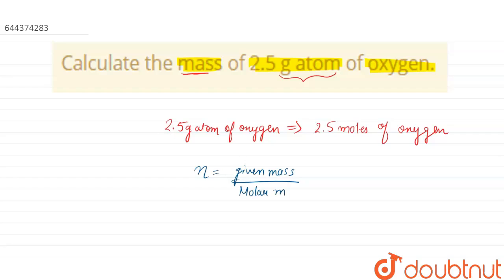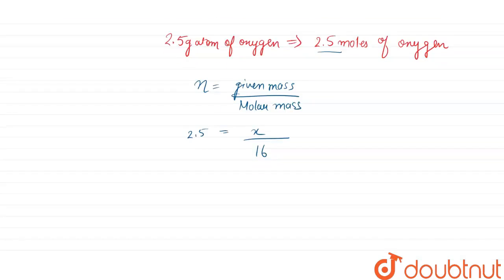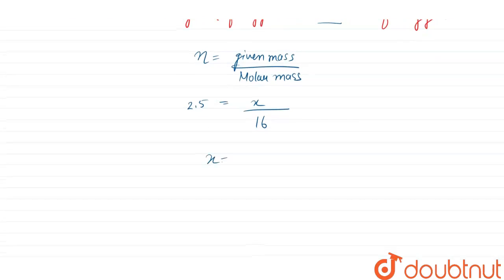And we know that molar mass of oxygen is 16 and number of moles are 2.5. So 2.5 equals, let's say given mass is x upon 16. So this comes out to be x equals 2.5 into 16.